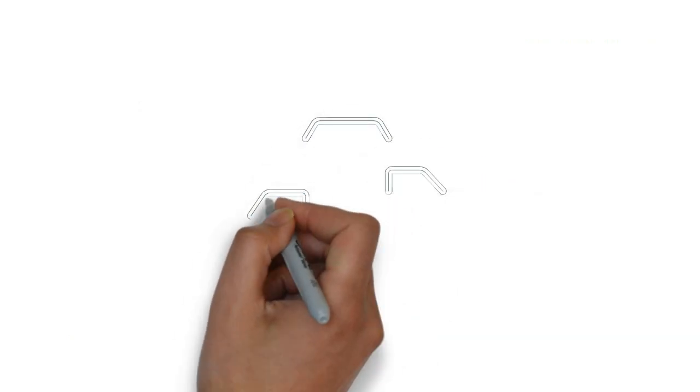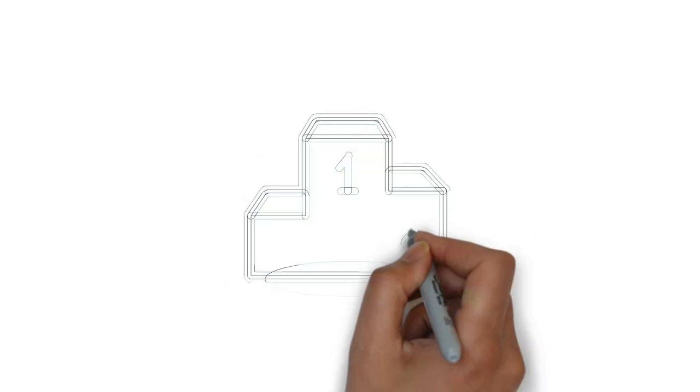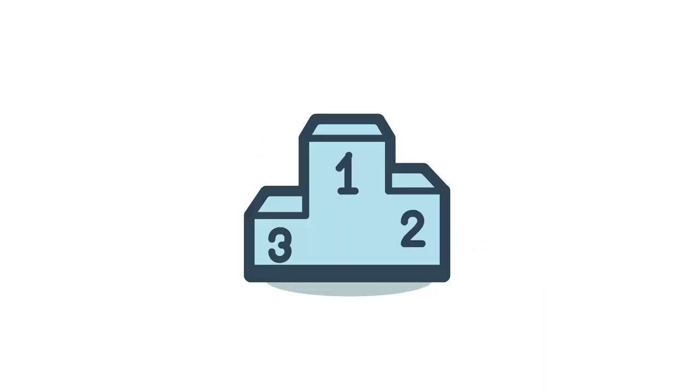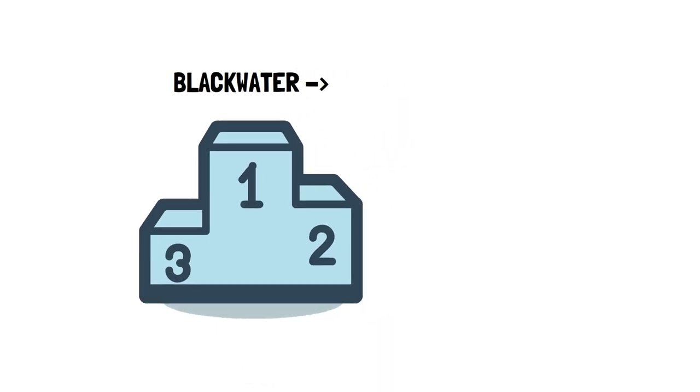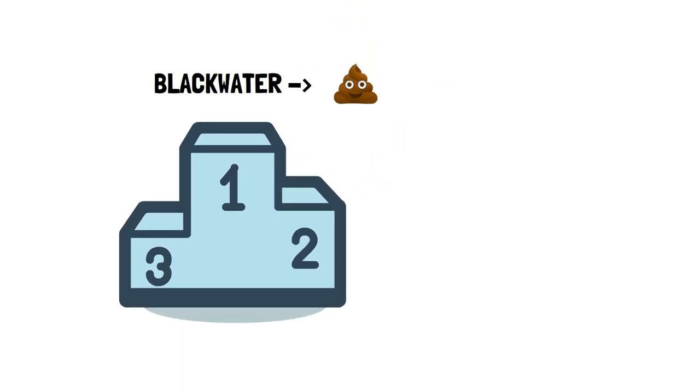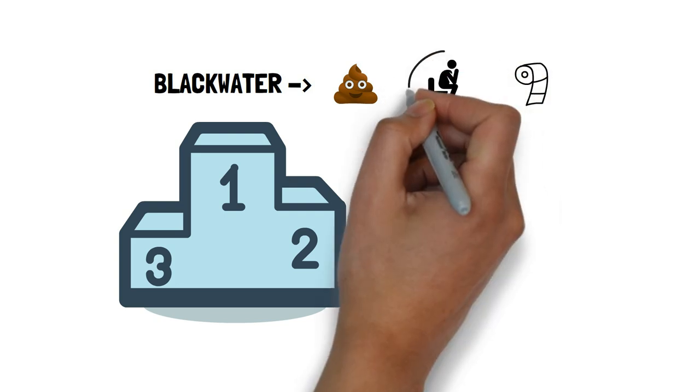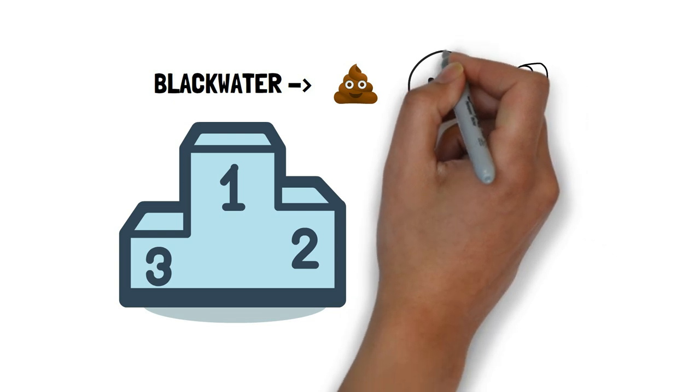Before we continue, there are three terms we'll need to understand as they'll come in handy in the video. The first term is black water. This refers to human excreta, flush water, and anal cleansing material, which is tissue paper, for example. Black water comes from the flush or pour flush toilet.